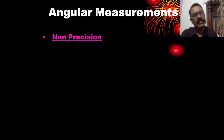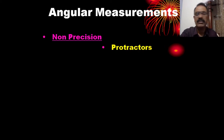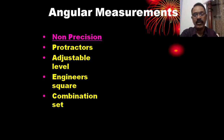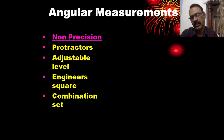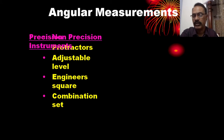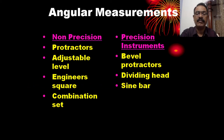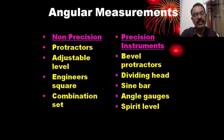Different instruments are used for angular measurements. Non-precision instruments include protractors, adjustable bevels, engineering squares, tri-squares, and combination sets. Precision instruments include bevel protractors, dividing head, sign bar, angle gauges, and spirit levels.